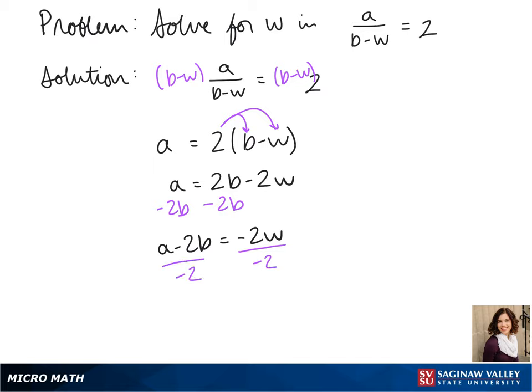So that gives us w equals a minus 2b over negative 2. This can also be written with the negative on top, so we do negative a minus 2b over 2, which gives us w equals 2b minus a over 2.